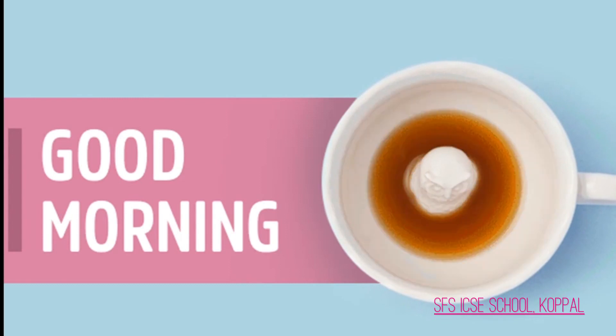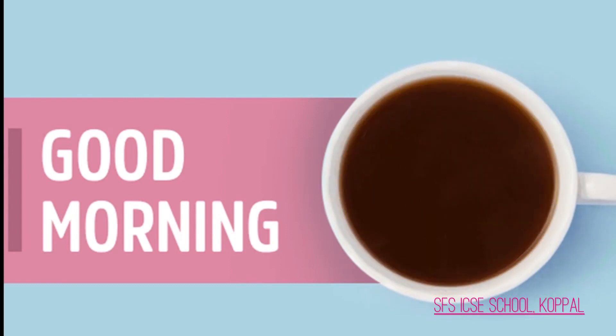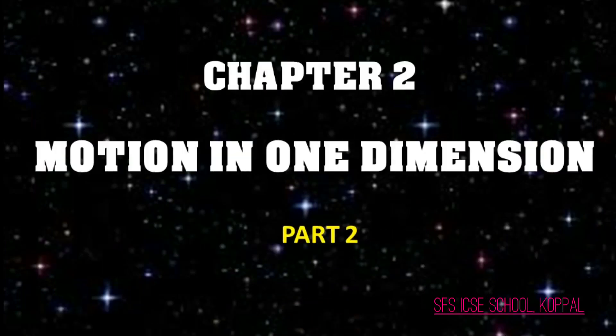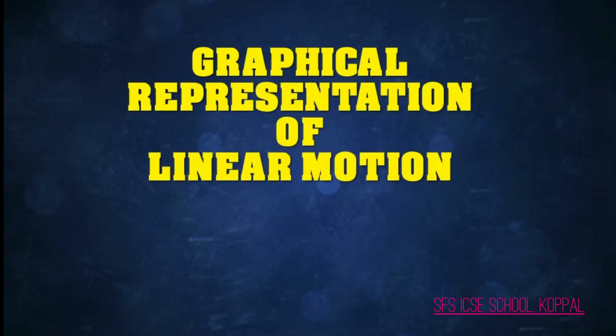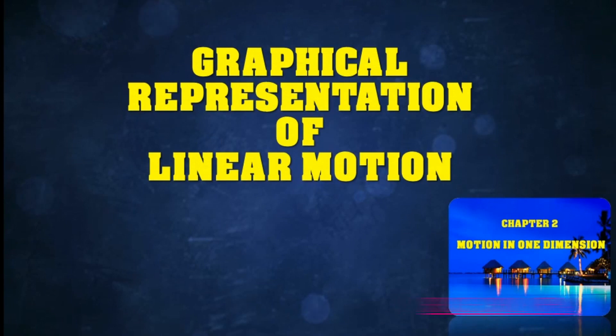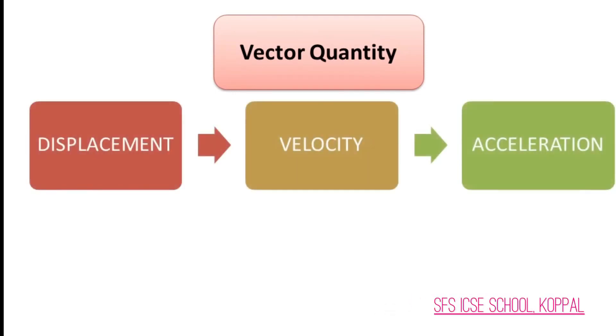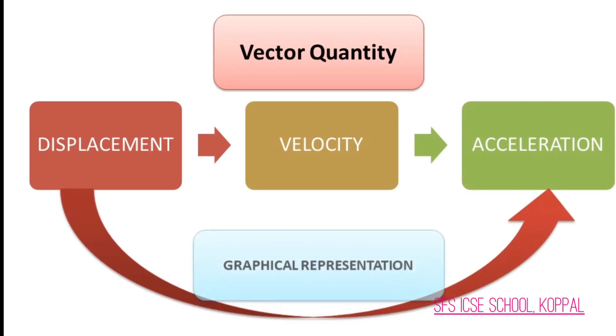Good morning everyone and welcome to the second session of online class. This is the second video of chapter 2 and in this video let us discuss about the graphical representation of linear motion. All those who have not attended the first part properly may not understand much from this session. Previously we studied three vector quantities: number one displacement, number two velocity, and number three acceleration. Today let us study about the graphical representation of these vector quantities.